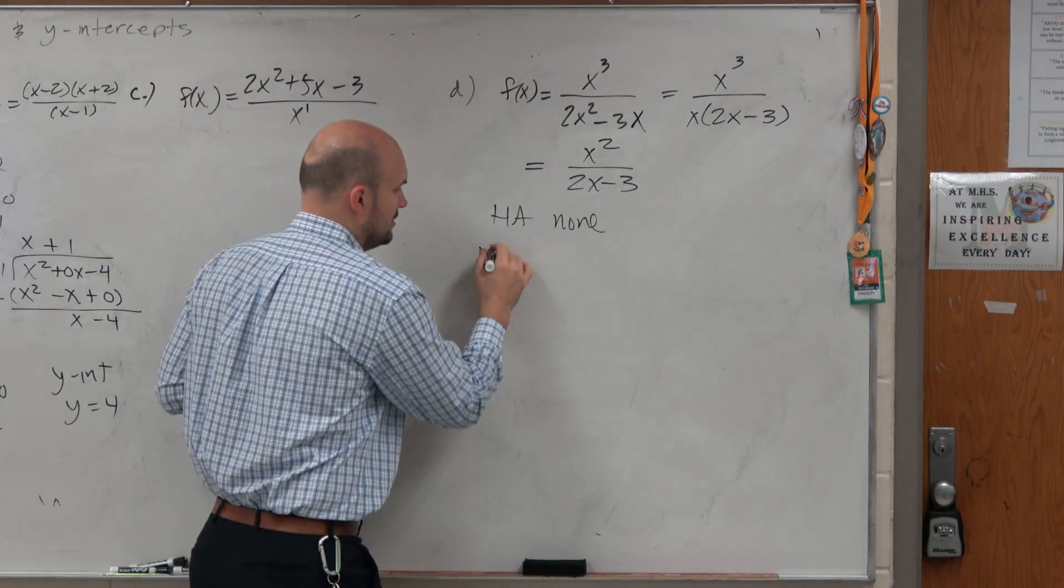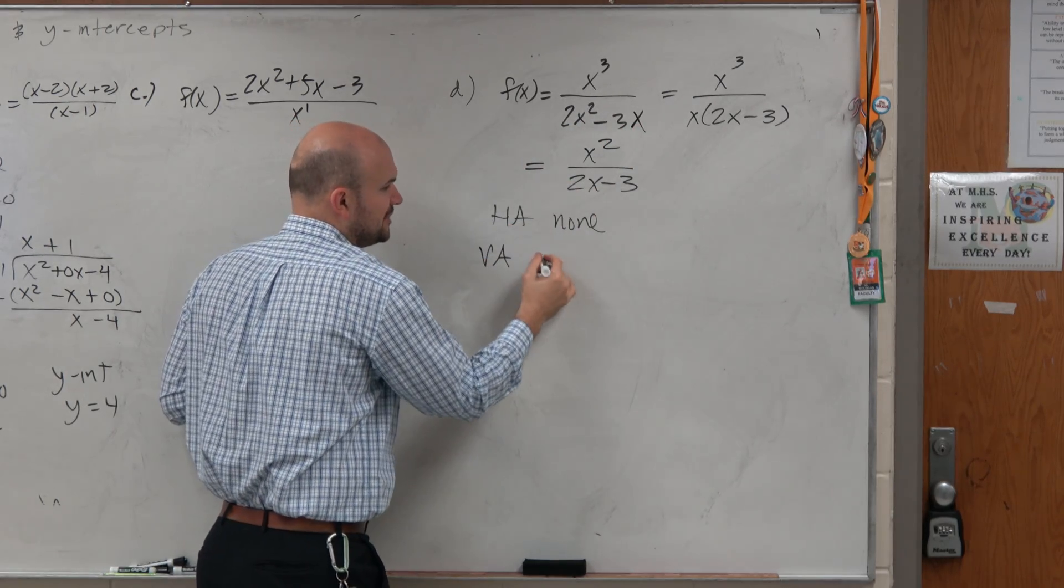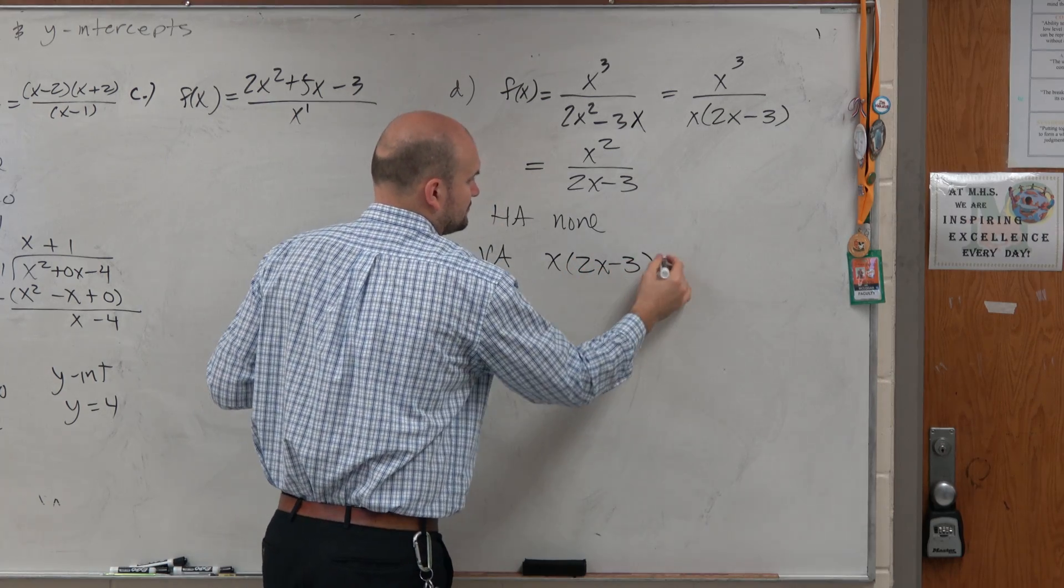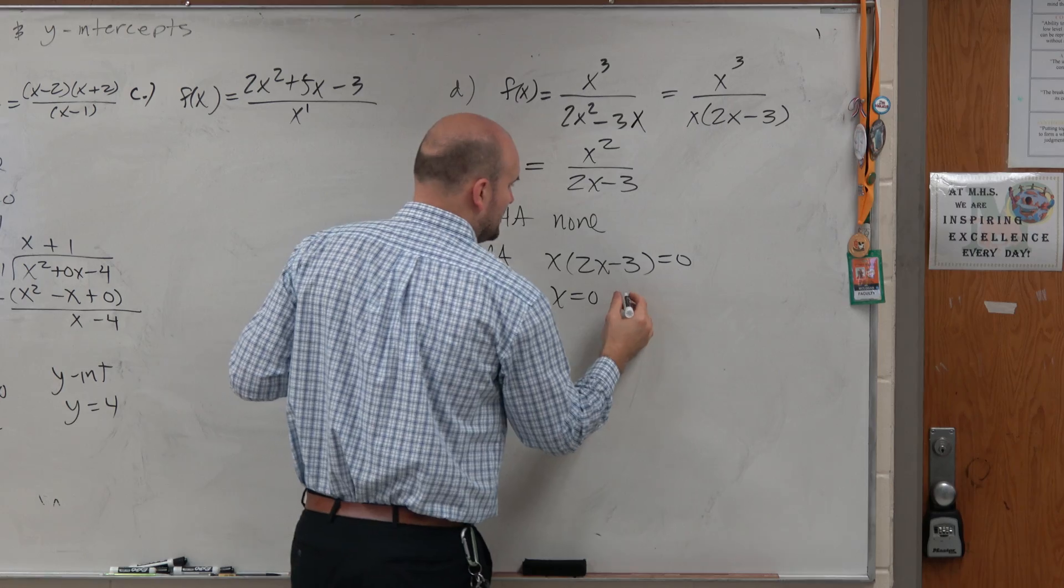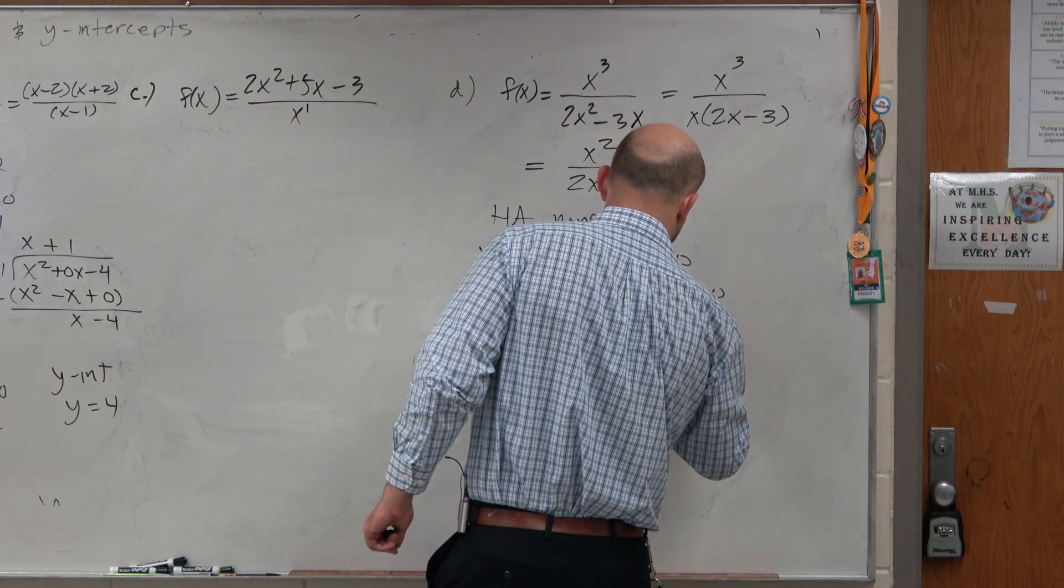For vertical asymptote, we're setting our denominator equal to 0, right? You could set your original denominator. You can set the factored form if you want to. And we could say x is equal to 0 and 2x minus 3 is equal to 0. So x is equal to 3 halves.